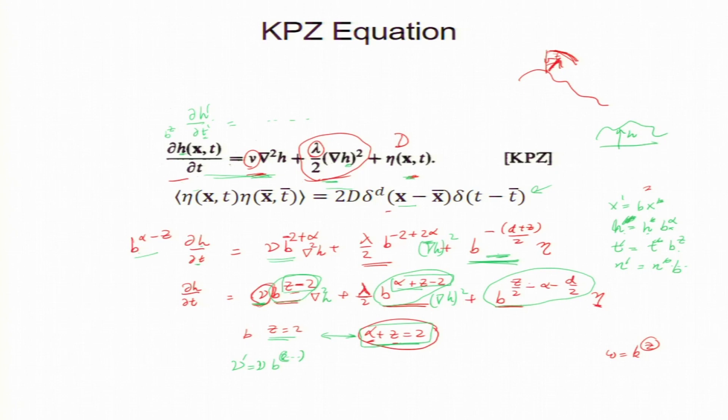So, we need to renormalize nu. I can also tell you that lambda also should be renormalized. This, this coefficient is a parameter. In fact, it is coupling constant. But it turns out because of Galilean invariance, lambda is not renormalized. Lambda remains same.